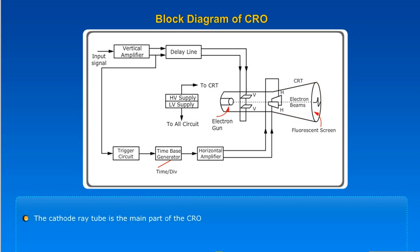This is a block diagram of CRO. The cathode ray tube is the main part of the CRO.